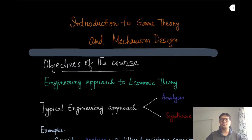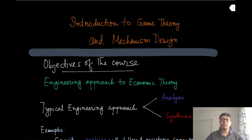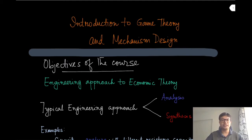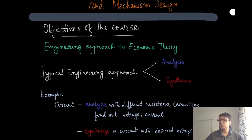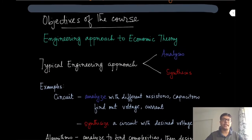Mechanism design is often called the engineering approach to economic theory, as defined by Eric Maskin, who is one of the recipients of the 2007 Nobel Prize in Economics for his contribution in mechanism design theory. Indeed, mechanism design is an engineering approach.